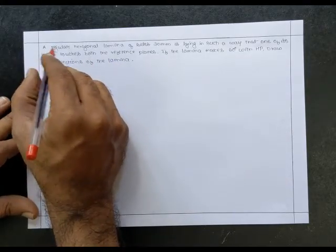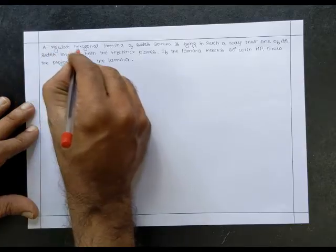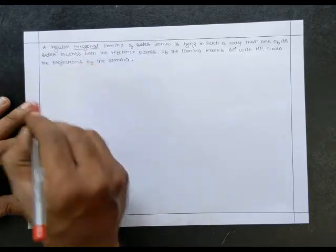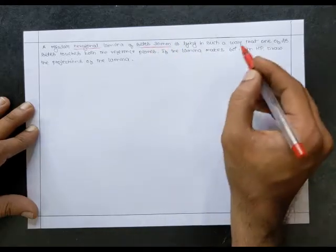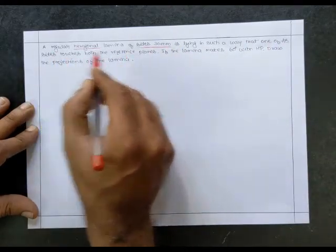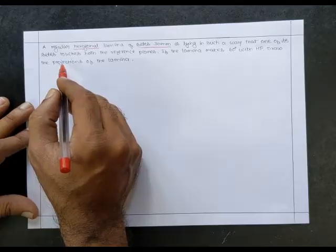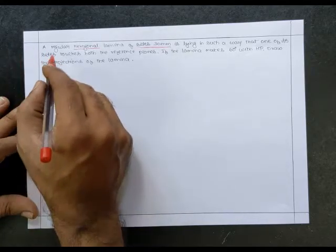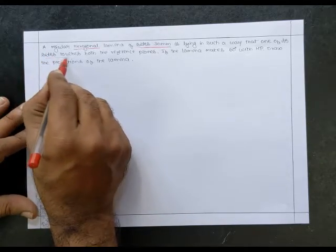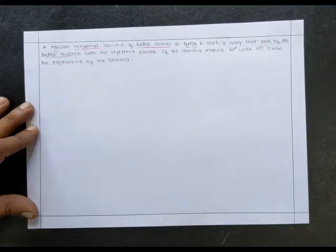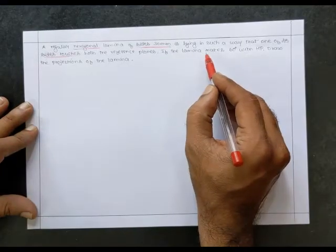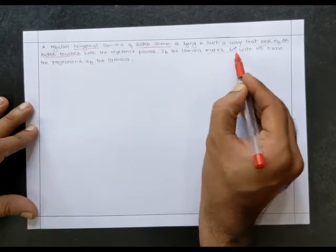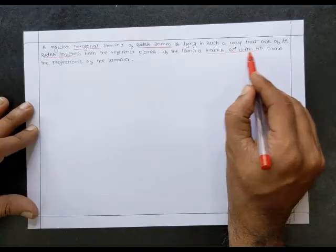Let us underline the important parameters: it is a regular hexagonal lamina, the side length given is 30 millimeter, lying in such a way that one of its sides touches both the reference planes. This is only possible when it is resting in the edge condition. The lamina is making 60 degrees with HP, which also confirms the problem is of the edge condition.